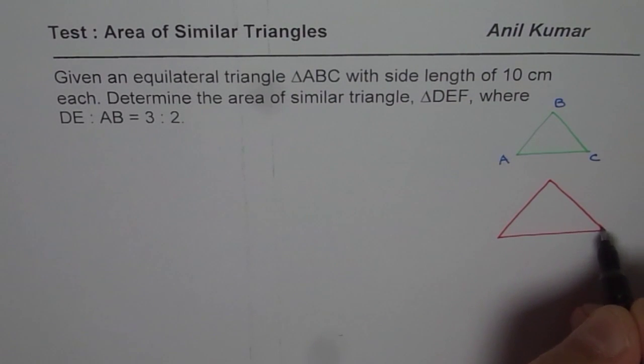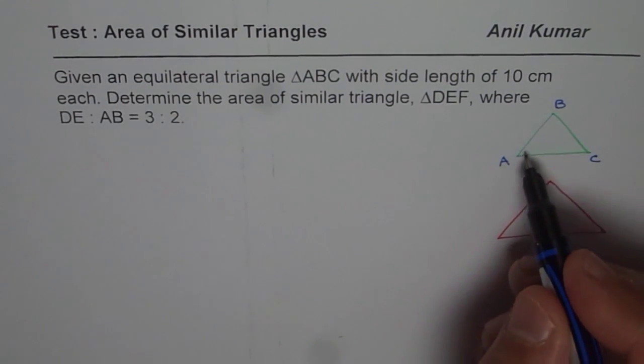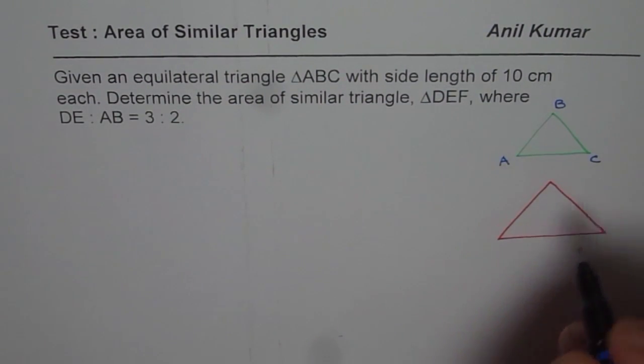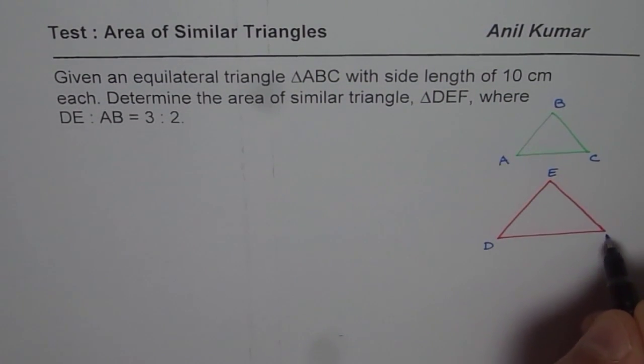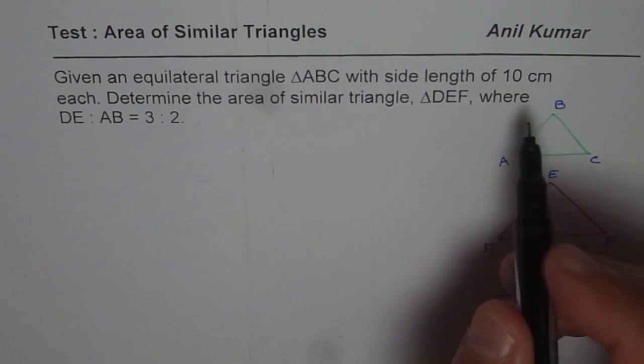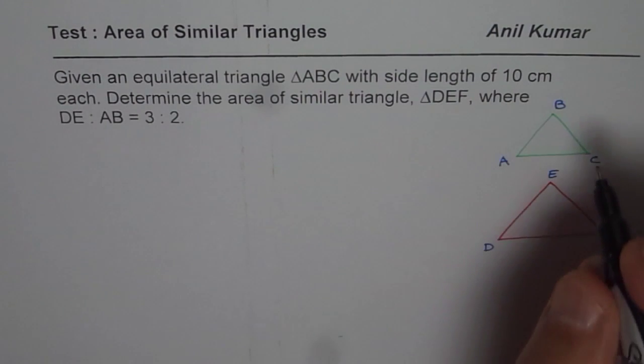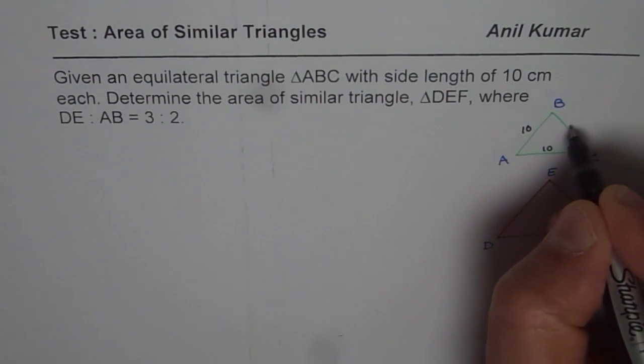Since both are equilateral, they should be similar. I don't even have to write that they are similar triangles because both are equilateral triangles, so they have same angles of 60 degrees each. So we have DEF here. What we are also given here is that the side length for the equilateral triangle ABC is 10, so it is 10 on each side, 10 centimeters.